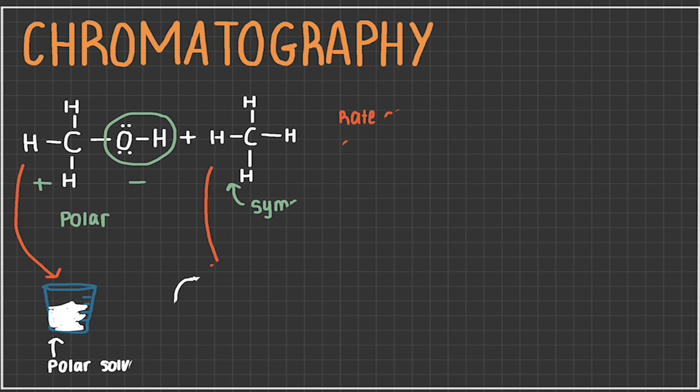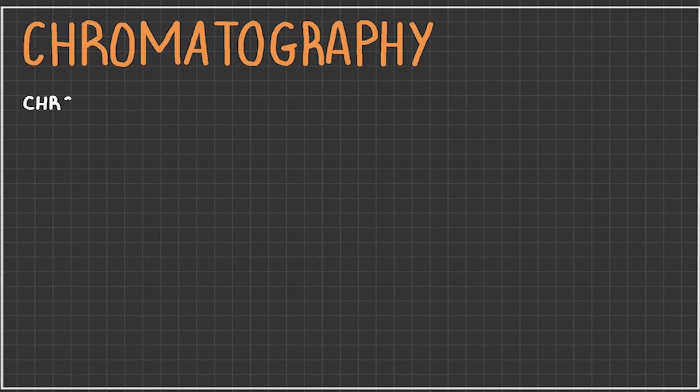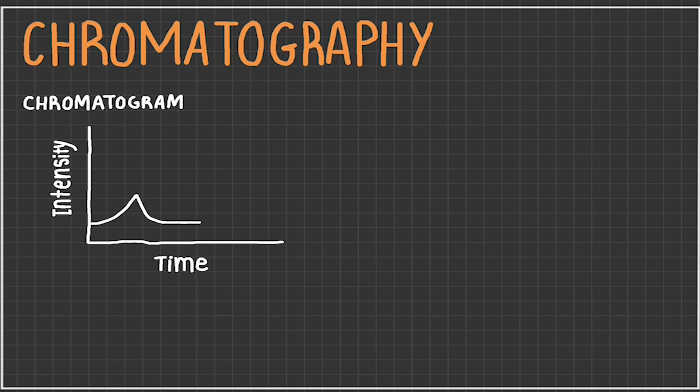In the end, you may be given a chromatogram to really understand the results. On the x-axis is the time at which the substance exited the column, and y-axis is the intensity or concentration of the substance. In our example, since the polar solvent was the stationary phase, the substance that exited first will be our polar CH3OH. From the peaks being at similar heights, we can see that they were of similar concentrations.